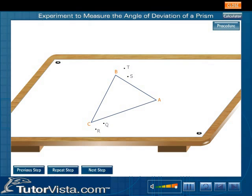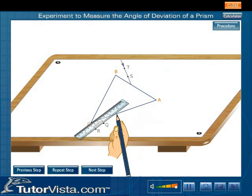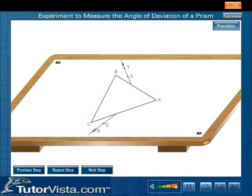Remove the pins and mark their positions. Join TS and RQ and extend them to meet the faces of the prism at P and O respectively.